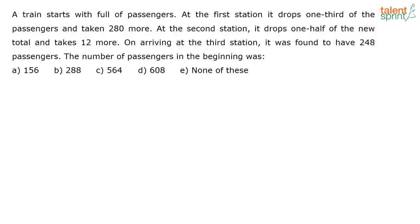This question was asked in the daily test. This particular question that you see on screen. A train starts with full of passengers. At the first station it drops one-third of the passengers and takes 280 more. At the second station it drops one-half of the new total and takes 12 more. On arriving at the third station it was found to have 248 passengers. The number of passengers in the beginning was...